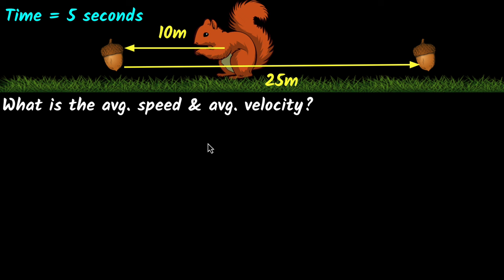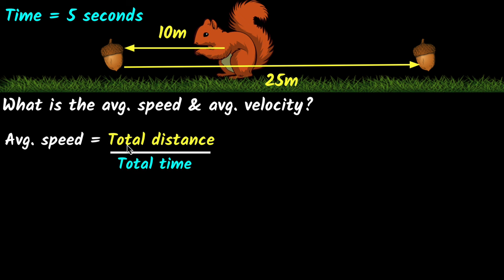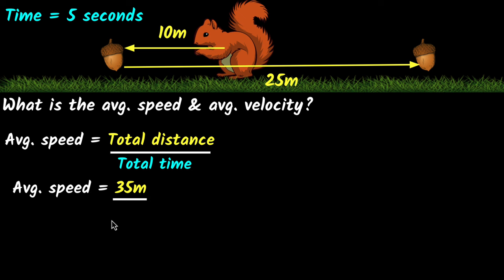Let's start with average speed. We define average speed as the total distance traveled divided by the total time taken. In this particular case, the squirrel travels 10 meters and then 25 meters, so the total distance is 35 meters, and the total time is five seconds. Average speed is 35 meters divided by five seconds, which equals seven meters per second.